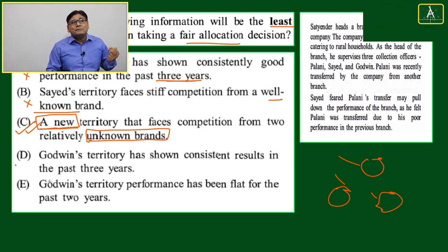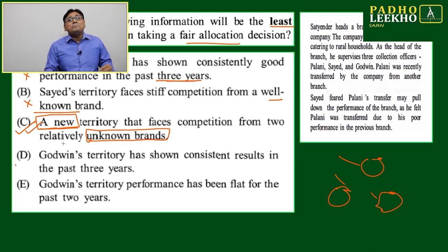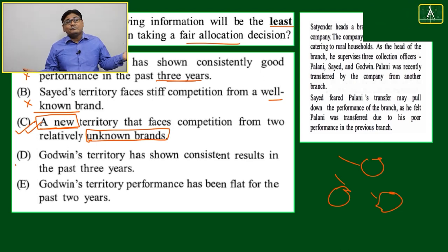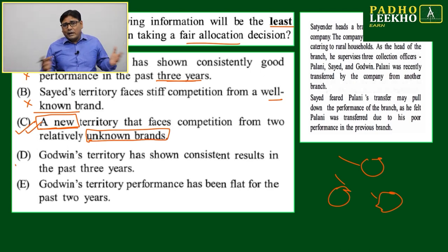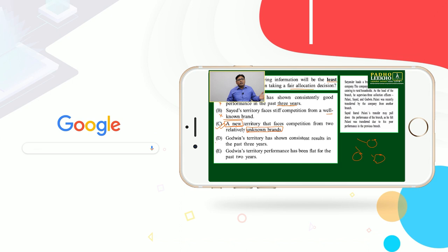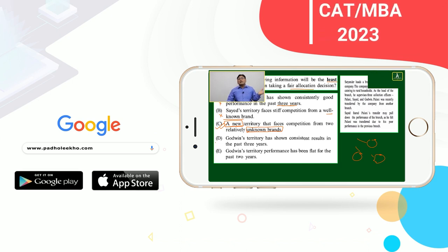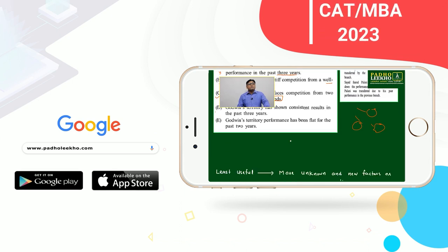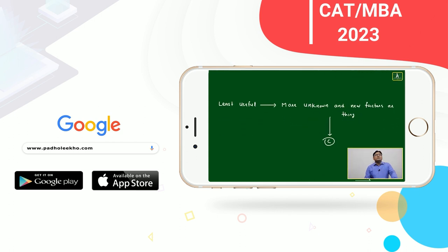But option C can be least useful because of unpredictable factors — new territory, no earlier track record, unknown brands with no brand history. The least useful option involves more unknown and new factors where no reliable data exists to make a fair allocation decision.